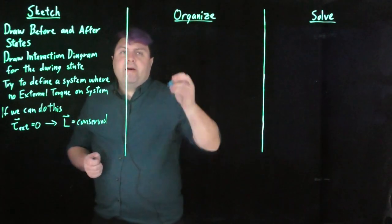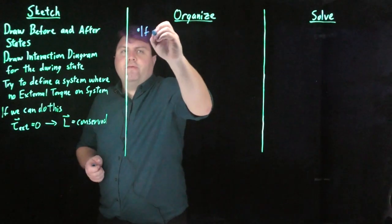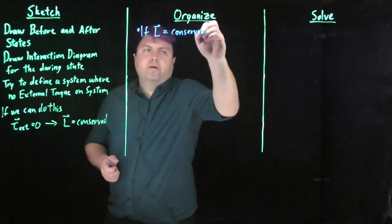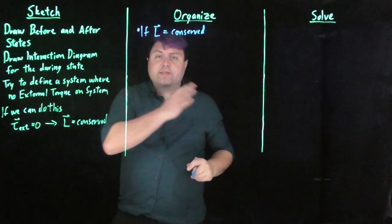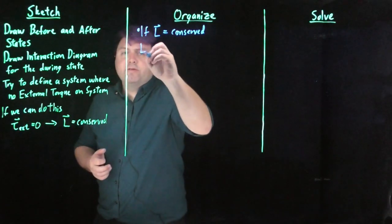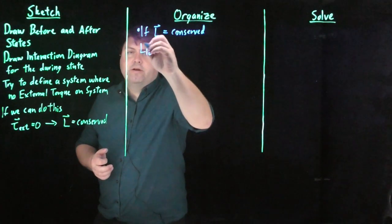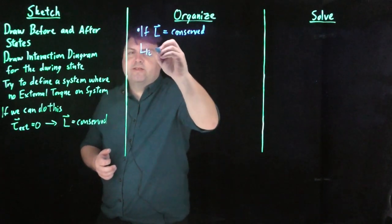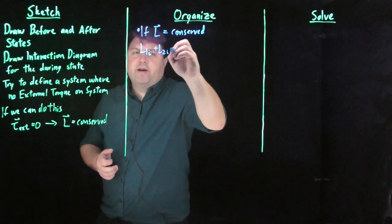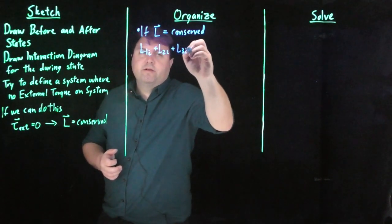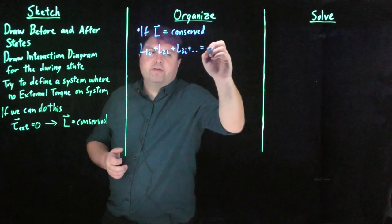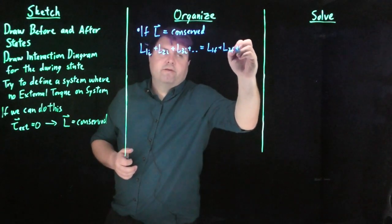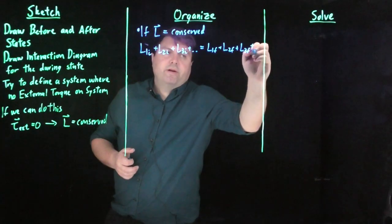What do we get if we have our angular momentum conserved? So if our angular momentum is conserved, we are saying that the angular momentum before is equal to the angular momentum after. So we can write in an equation of L1i, and with angular momentum we don't have to worry about vectors, at least not at this level. So L1i plus L2i plus L3i, so on and so forth, is equal to L1f plus L2f plus L3f, and so on and so forth.